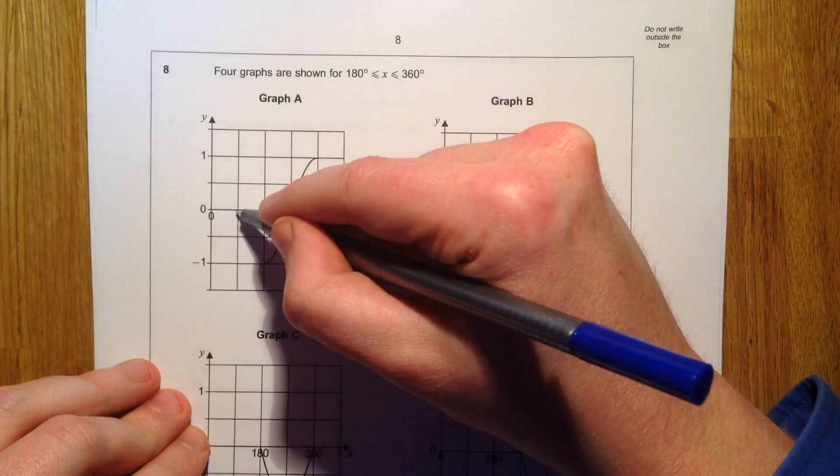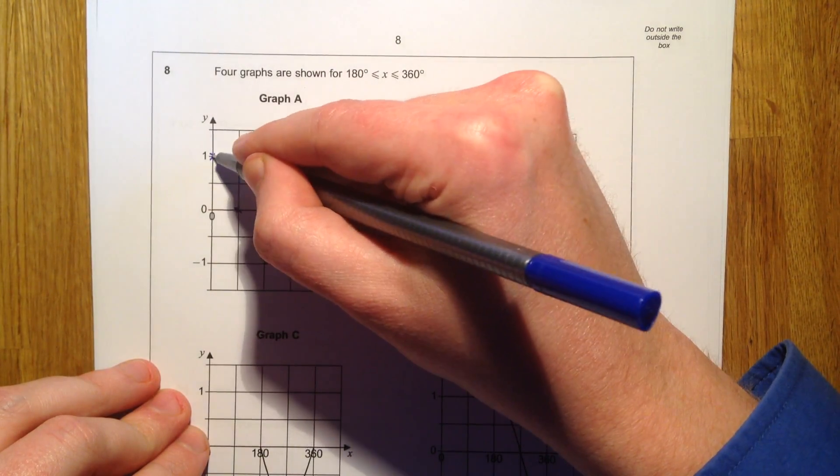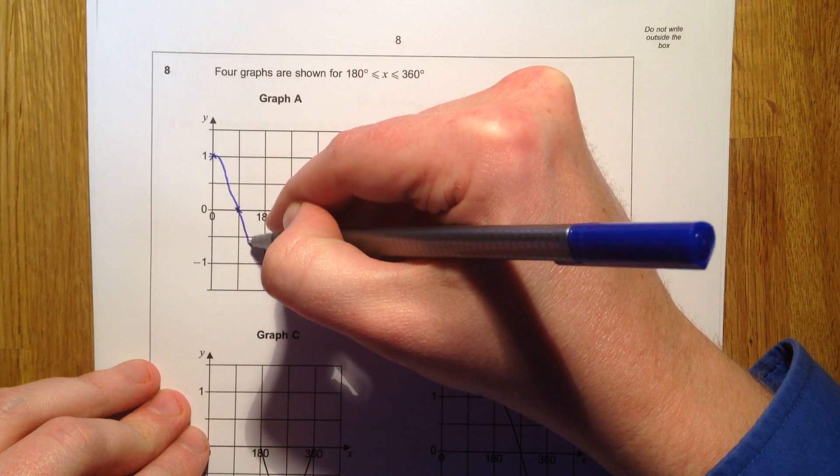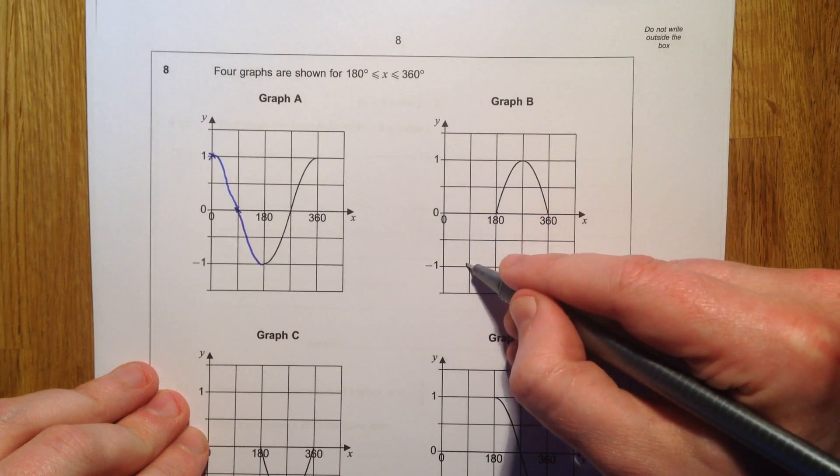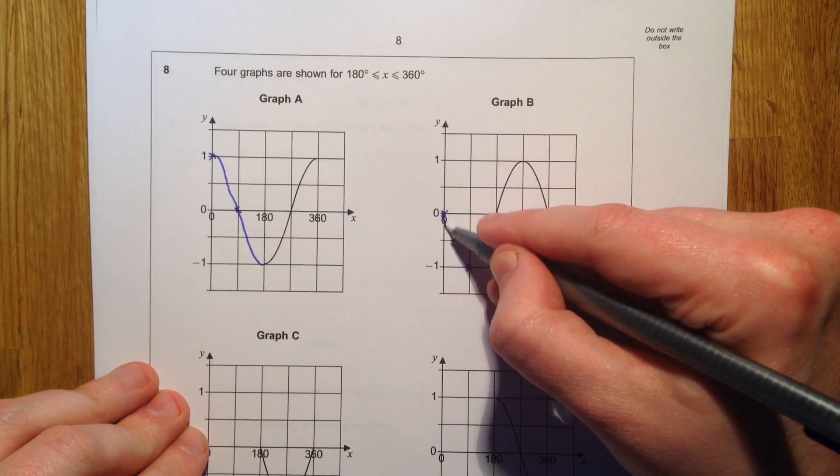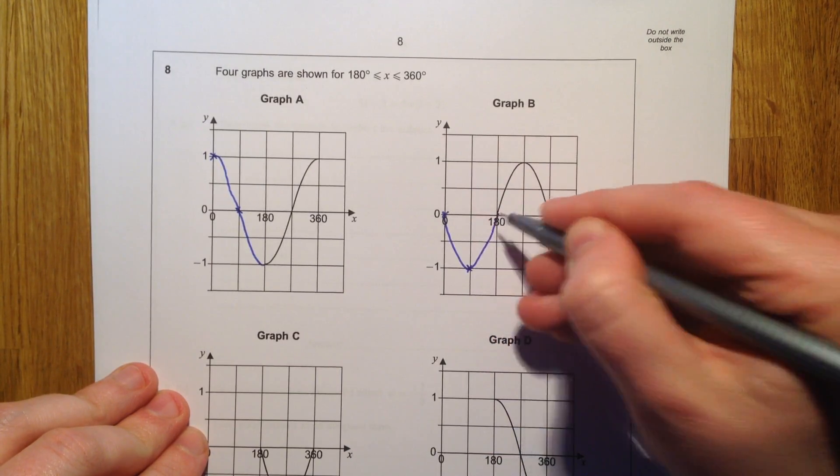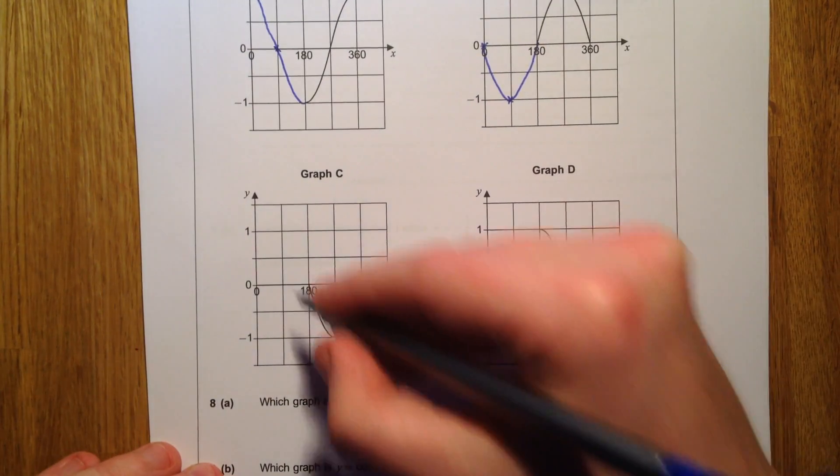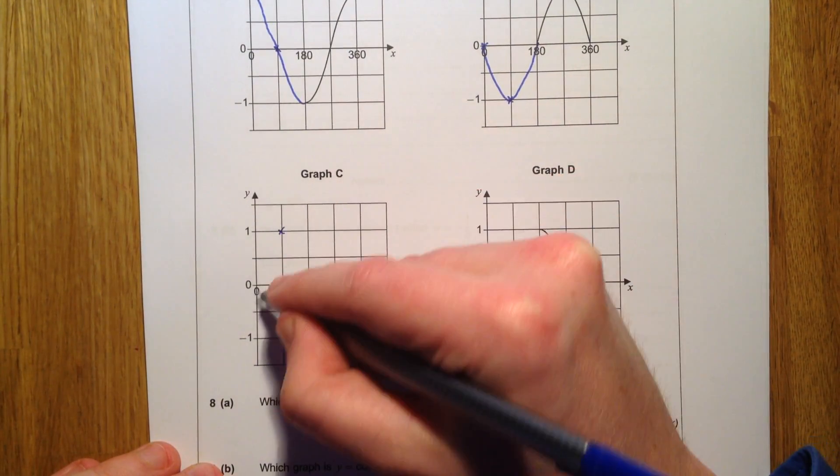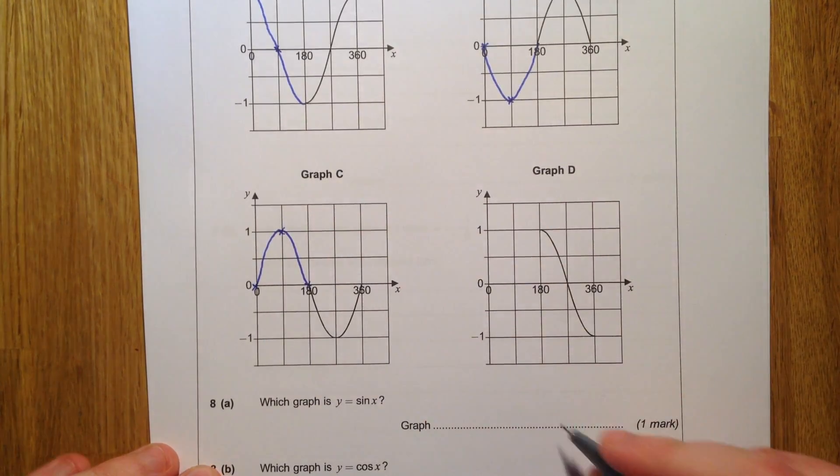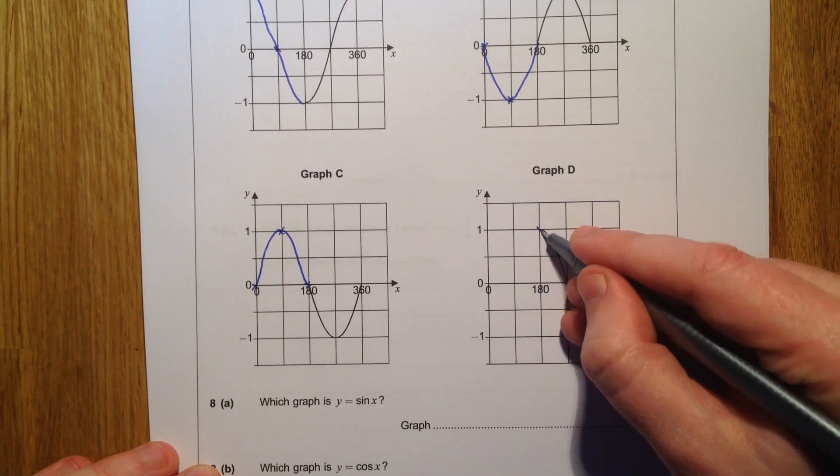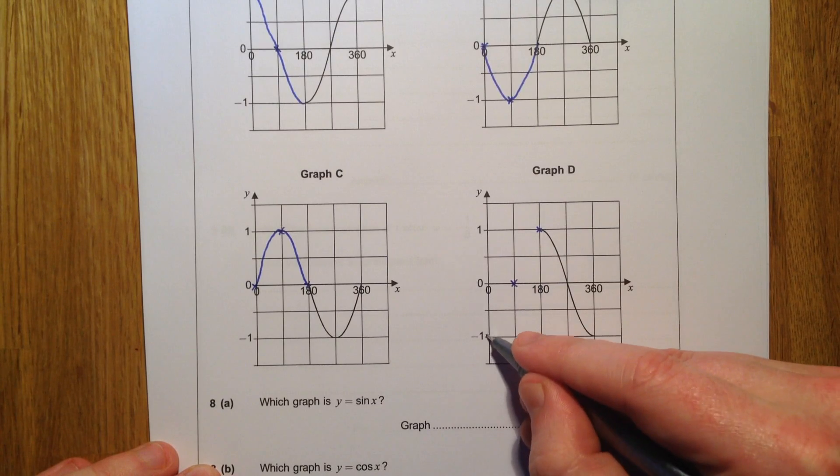I'm going to imagine that this graph goes up here and then up here, and this is a much more familiar graph to me. This one is going to go down to there and then back to there. Graph C is going to go up to there and then down to here, and then this one is going to go back to here and then down to the bottom.